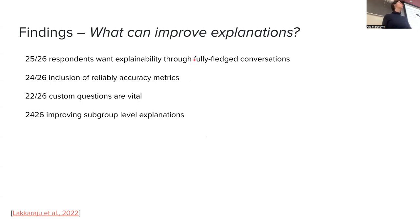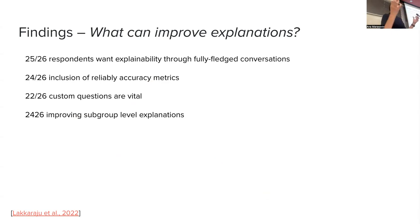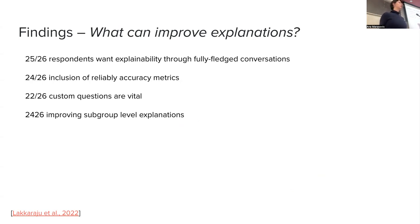Among things they want to see improved: obviously they wanted the ability to have a conversation to get explanations, they wanted reliable accuracy measurements, they wanted the ability to ask custom questions. They also wanted the ability to improve subgroup-level explanations. If you remember when we talked about influence functions, they showed a paper where influence functions can be extended to removing a group of examples — rather than just one — and seeing how that affects performance. This is not something you now have implemented in any of the libraries you have engaged with so far.